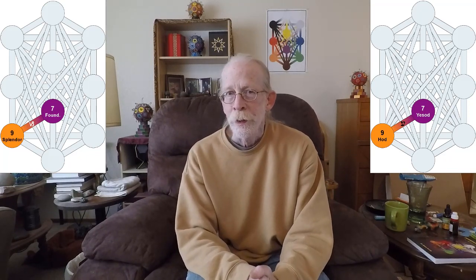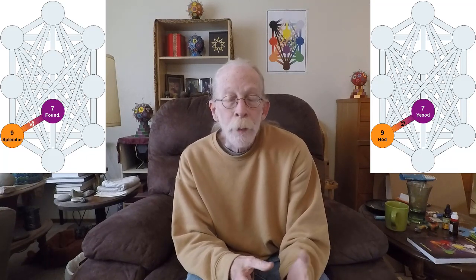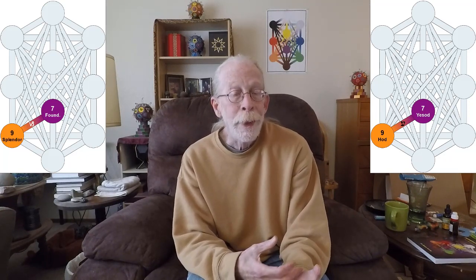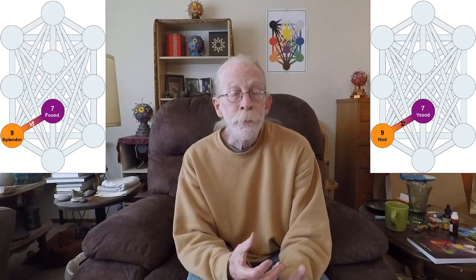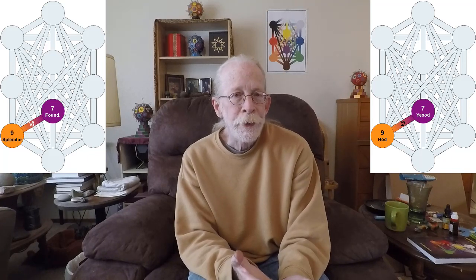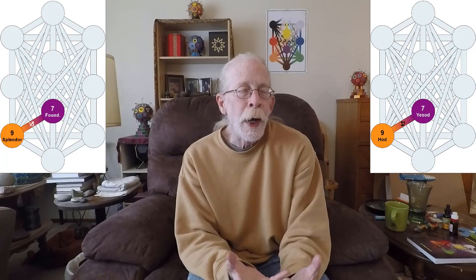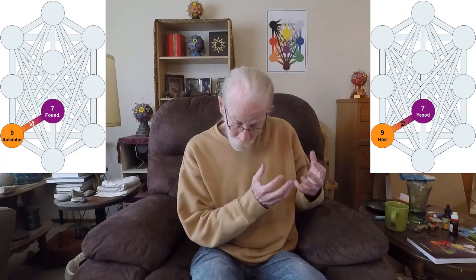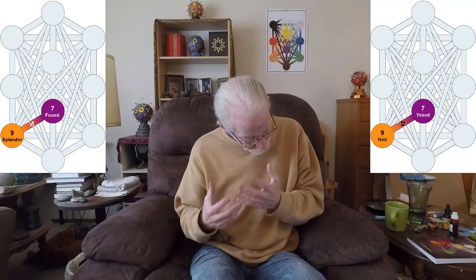This relates very directly to the significance of Capricorn here. The most important thing about this path is that it confers the power to decide to the rational intellect. It is the rational intellect that decides, and that power descends via this path from Yesod to Hod.